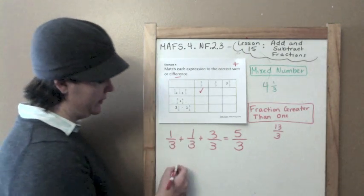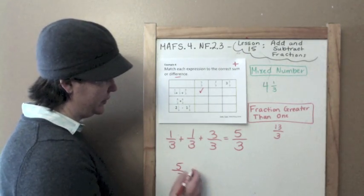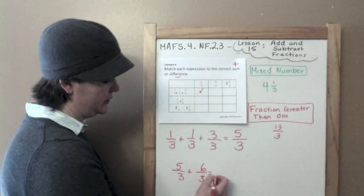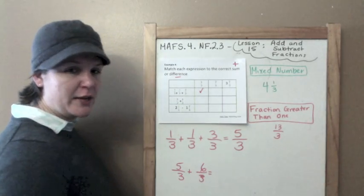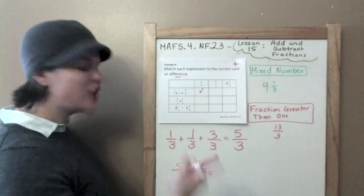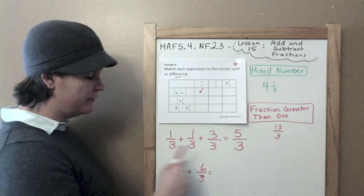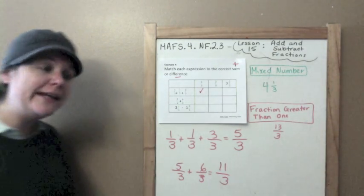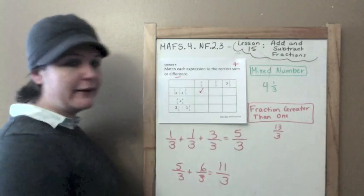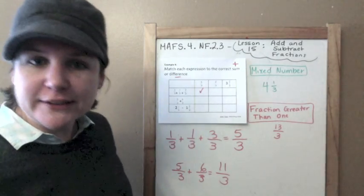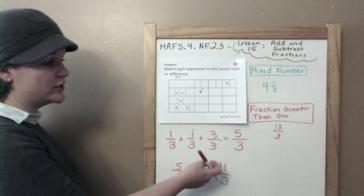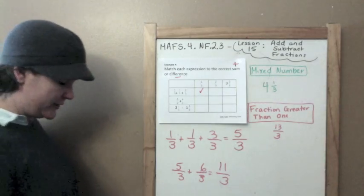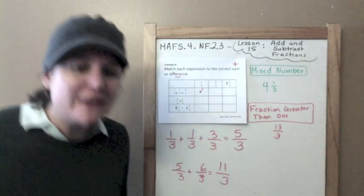The next one: five-thirds plus six-thirds. Denominators are the same. Five plus six is eleven. Slide our denominators across, we get three. But I don't see eleven-thirds up there, which means I need to change this from a fraction greater than one into a mixed number, which means I need to bust out my division.